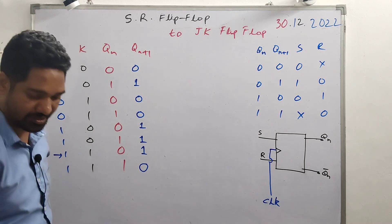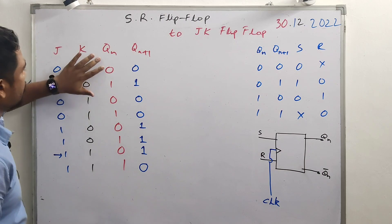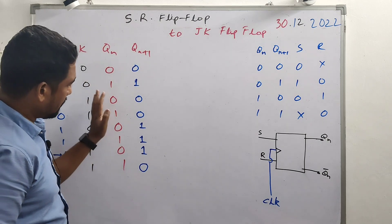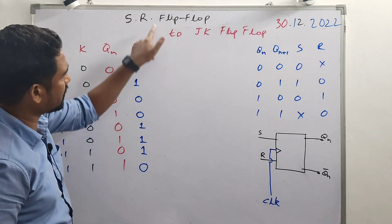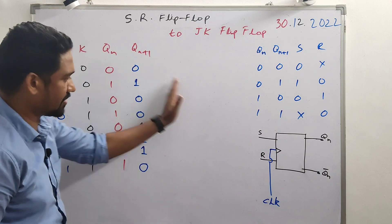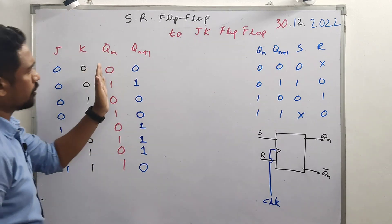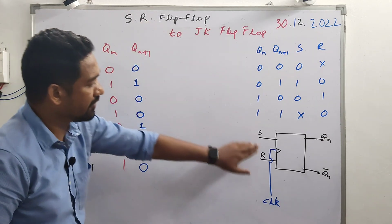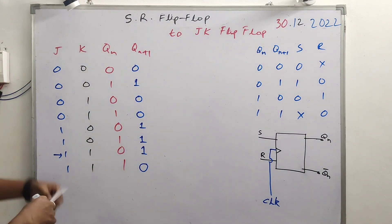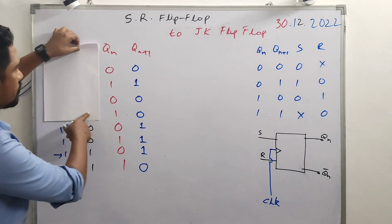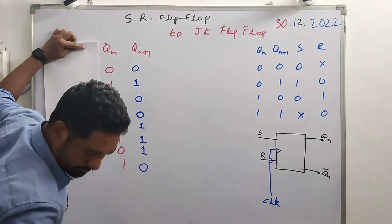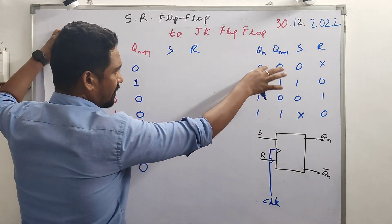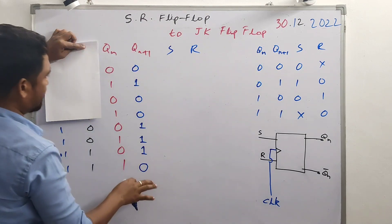Now we build the extended truth table of the JK flip-flop. We need to extend it using the excitation table of the given (existing) SR flip-flop. One table is the truth table of the destination flip-flop (JK), and the other is the excitation table of the existing flip-flop (SR). We will note down the S and R values from the excitation table.